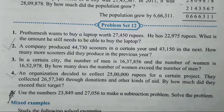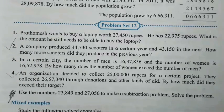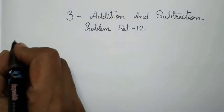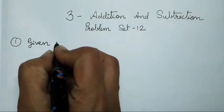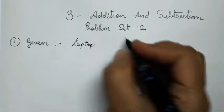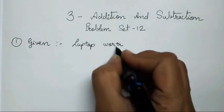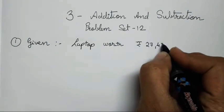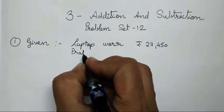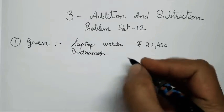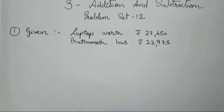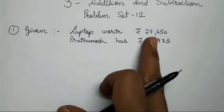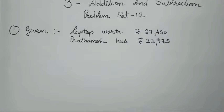That means we have to find how much more money Prathamesh needs in order to buy that laptop. So first we write what is given: laptop worth rupees 27,450, and Prathamesh has rupees 22,975. In short, we have to find how much amount he still needs to buy the laptop, so we will subtract to get the answer.